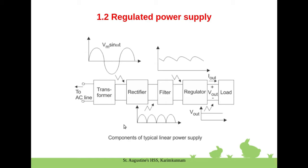Now we look at a regulated power supply. The block diagram includes: a transformer, which converts AC input; a rectifier that converts AC to DC; a filter capacitor that smooths the DC signal, removing positive and negative ripple values; and finally a voltage regulator stage. The output voltage remains constant despite load variation or AC input voltage changes.